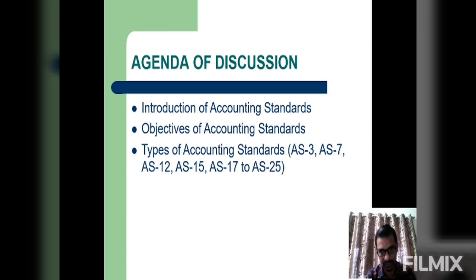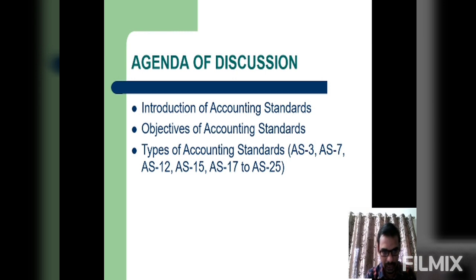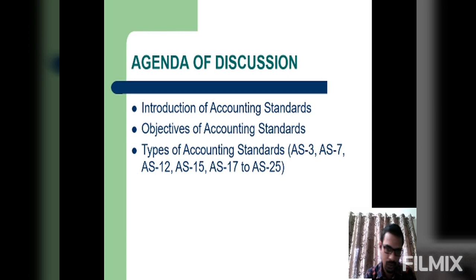The Accounting Standards we have to study this year are: Accounting Standard Number 3, Accounting Standard Number 7, Accounting Standard Number 12, Accounting Standard Number 15, Accounting Standard Number 17, and Accounting Standard Number 22.